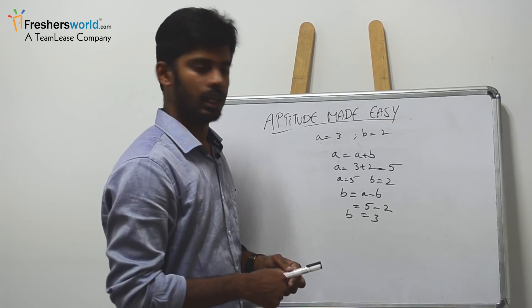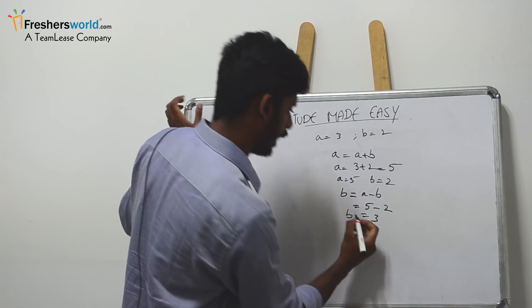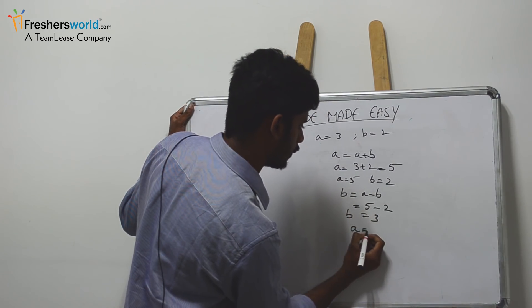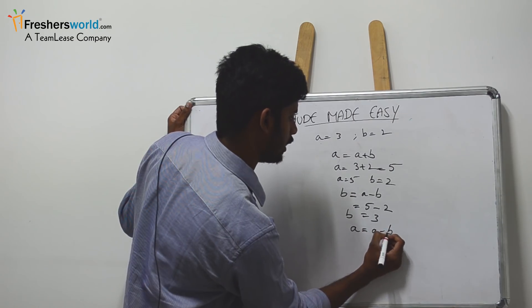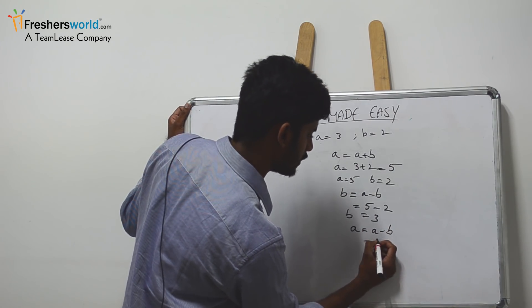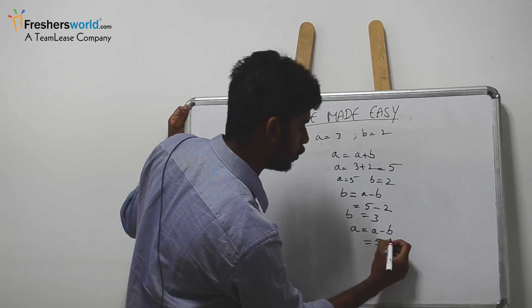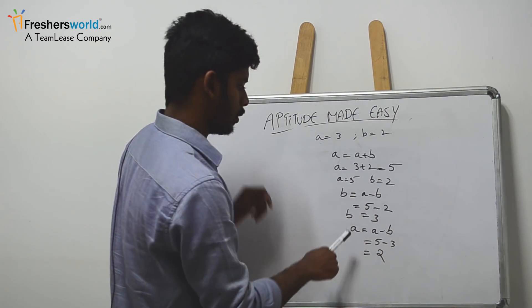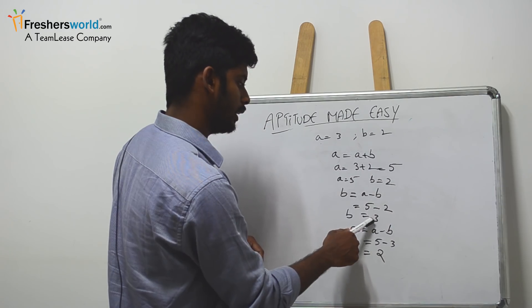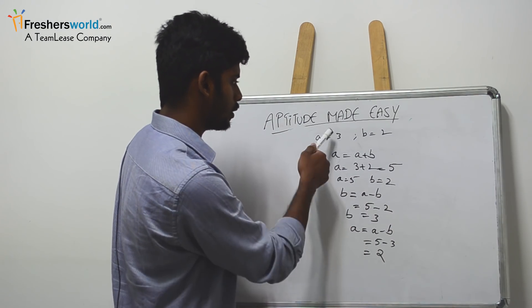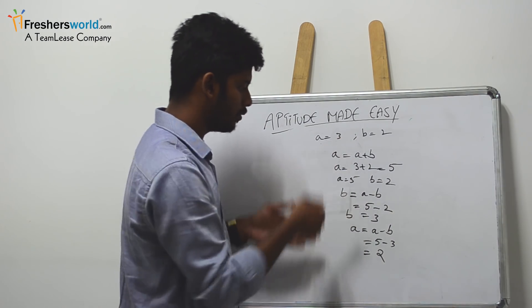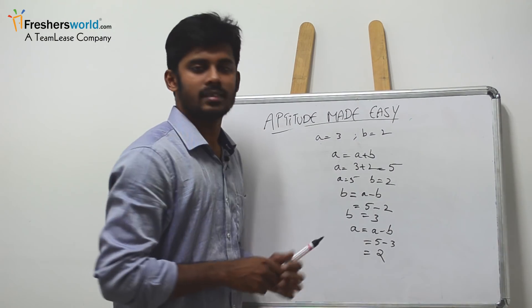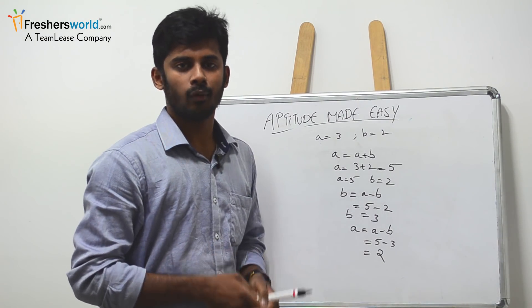Now what is the a value? I will write a = a - b. Already a value is 5 and b value now is 3, so a value now turns to 2. So now we got b value equal to 3 and a value equal to 2. We have swapped without using a third variable. That's how we do it in technical rounds or paper explanations.